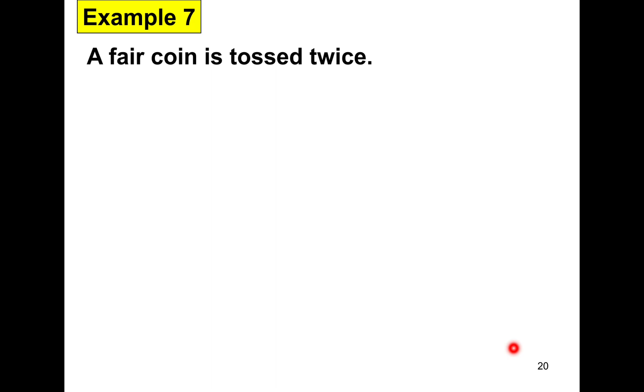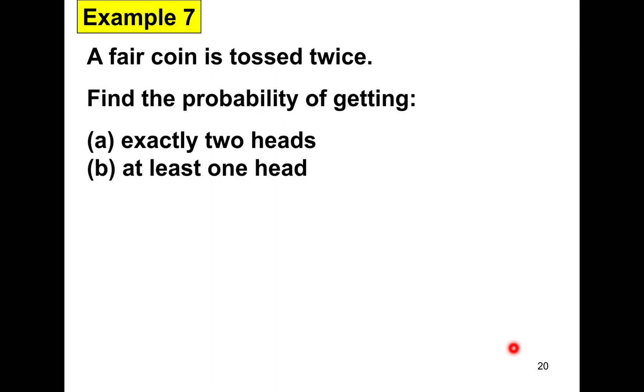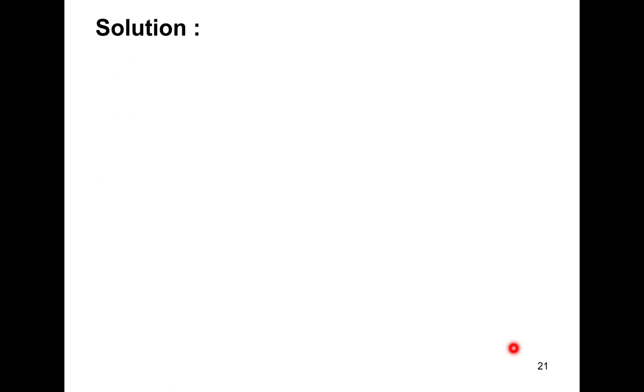Next is example number 7. A fair coin is tossed twice. Find the probability of getting A) exactly 2 heads, and B) at least 1 head. We may represent these questions using what we call tree diagrams.